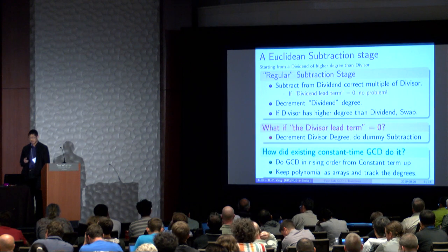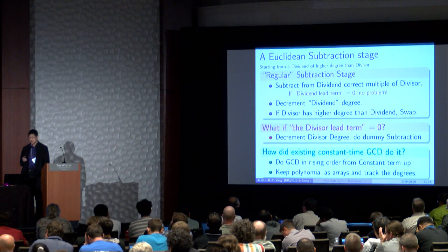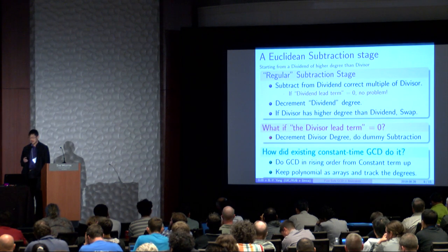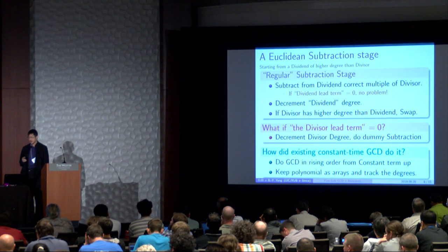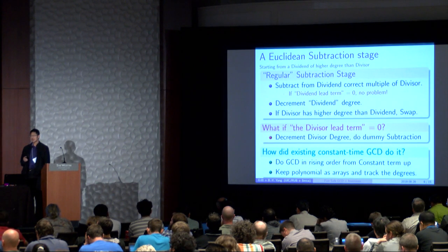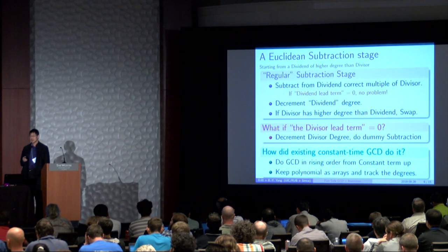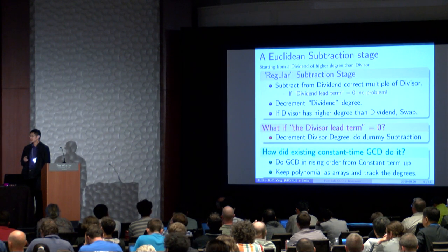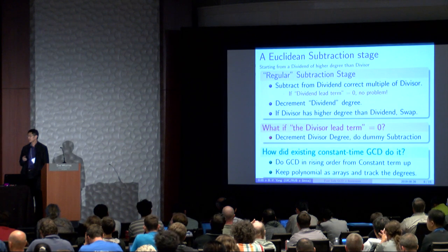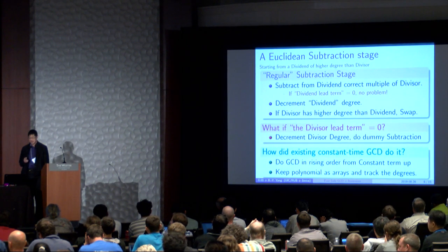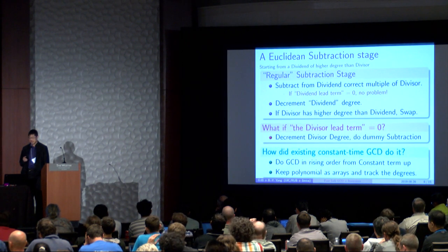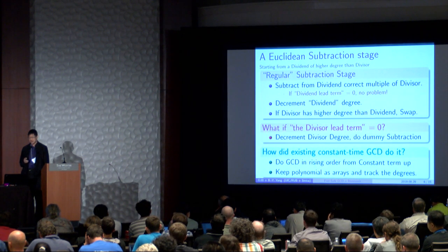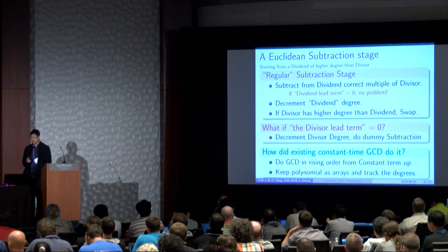However, if there is a zero lead term for the divisor, we still need to decrement the divisor degree and do a dummy subtraction. And we need to do this whether this happens or not because of constant time. So how did the existing constant time GCDs do it? They mostly kept the polynomials as arrays and kept the track of degrees, and they do the GCD in rising order from the constant term up.